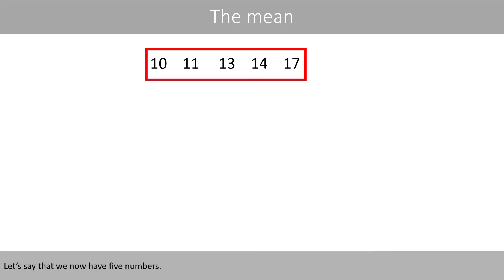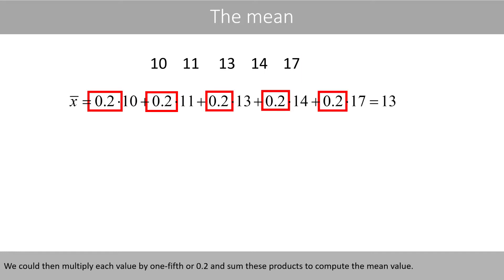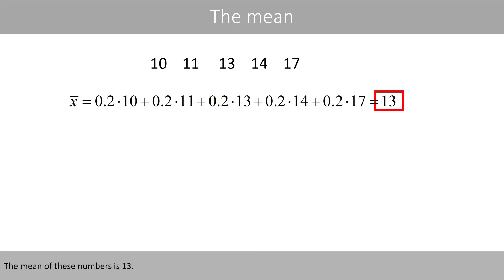Let's say that we now have five numbers. We could then multiply each value by 1/5, or 0.2, and sum these products to compute the mean value. The mean of these numbers is 13.